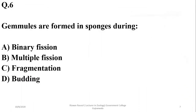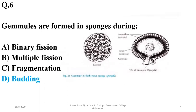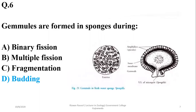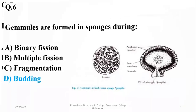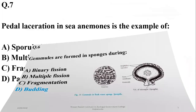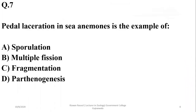Number six: gemmules — they are found in sponges. Gemmules are actually internal buds. That's why the right option will be beta. They are found as a source of internal buds in various sponges.